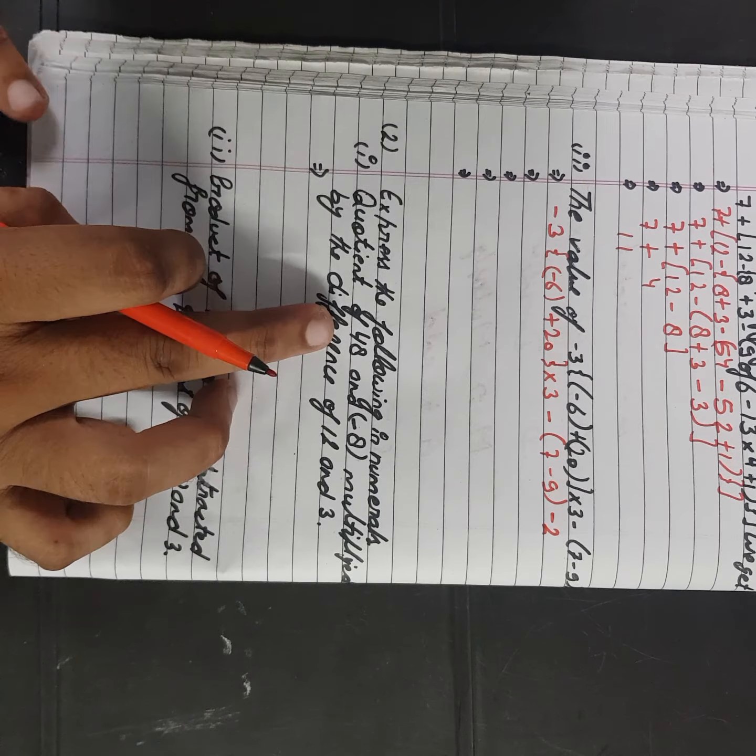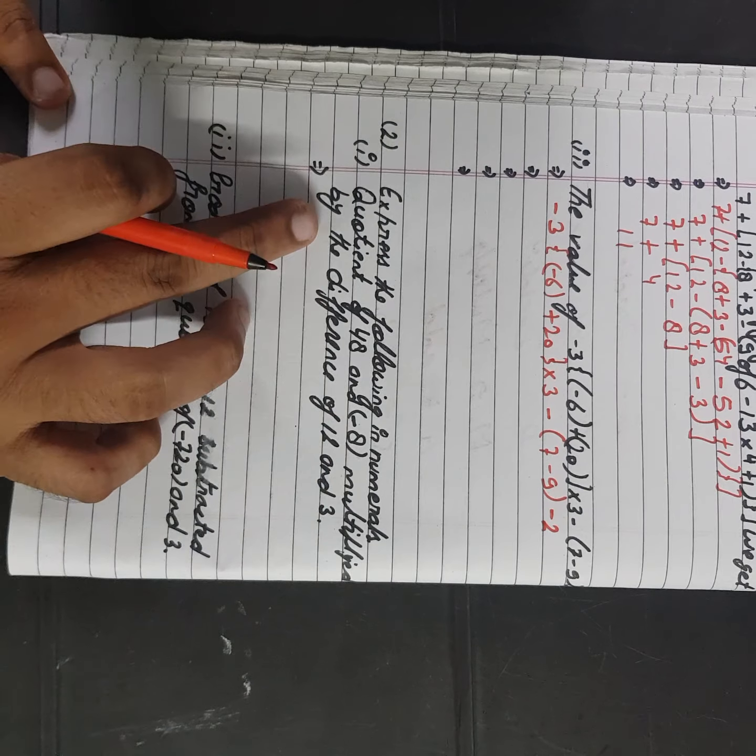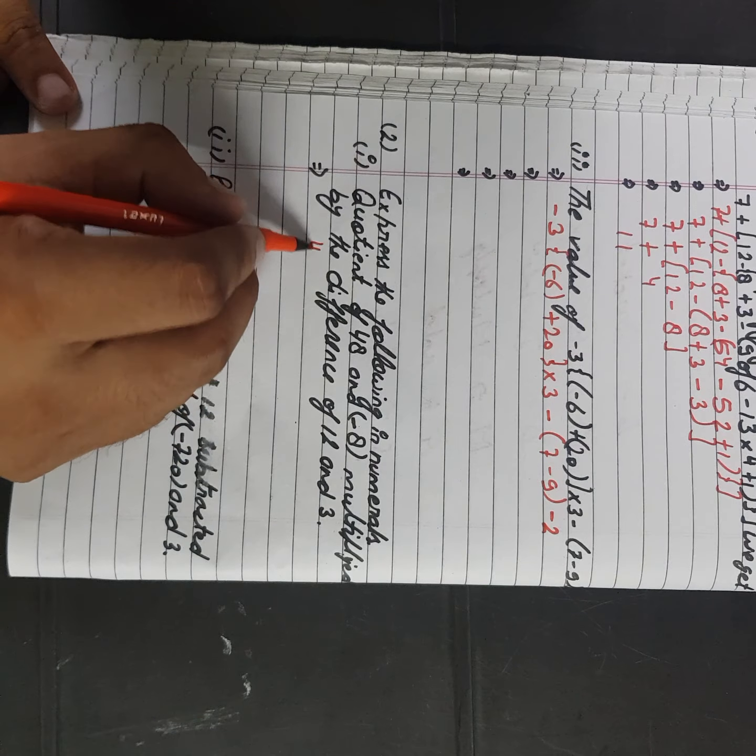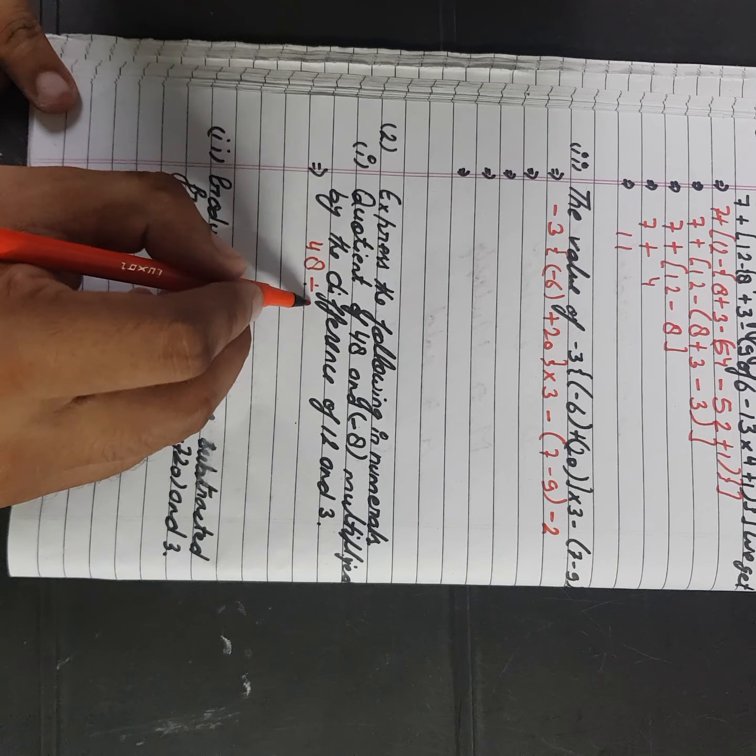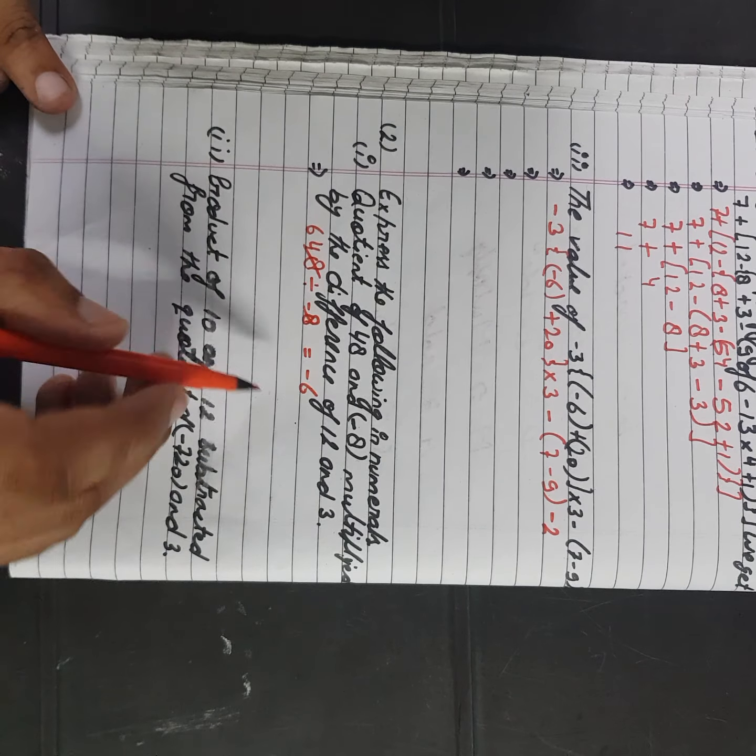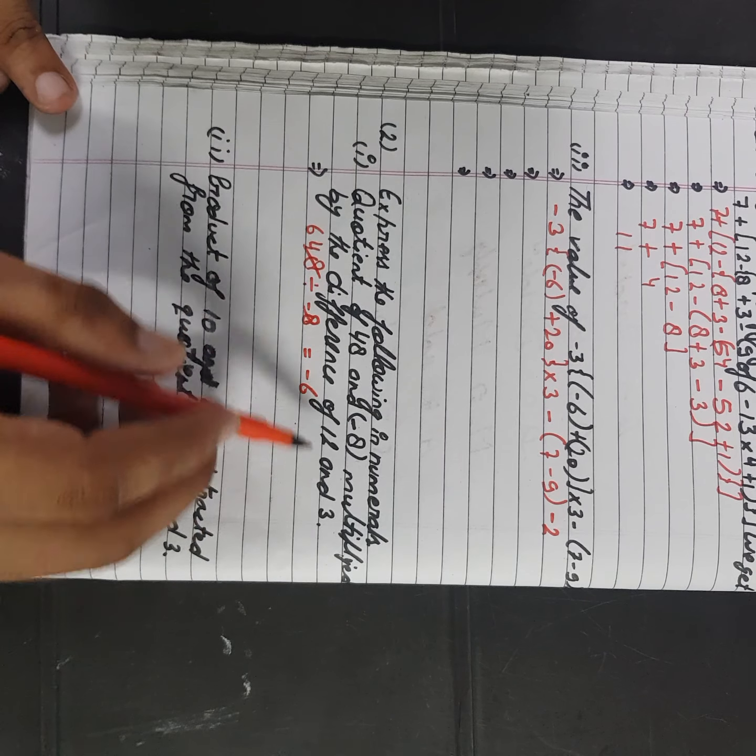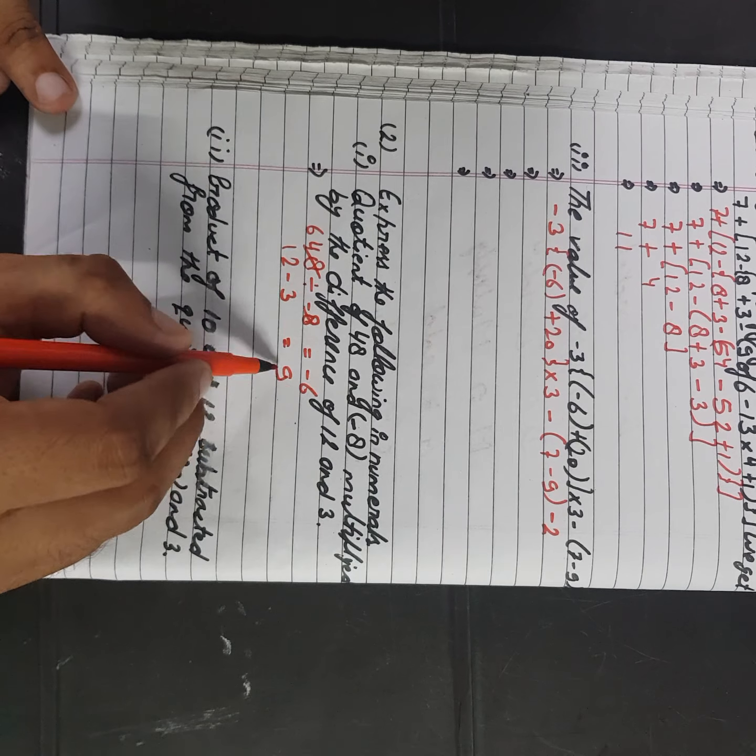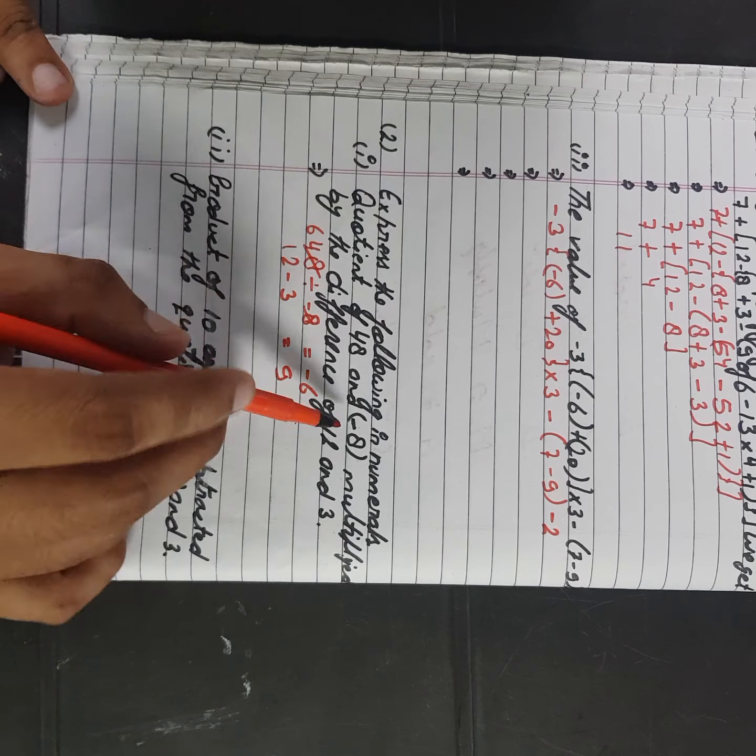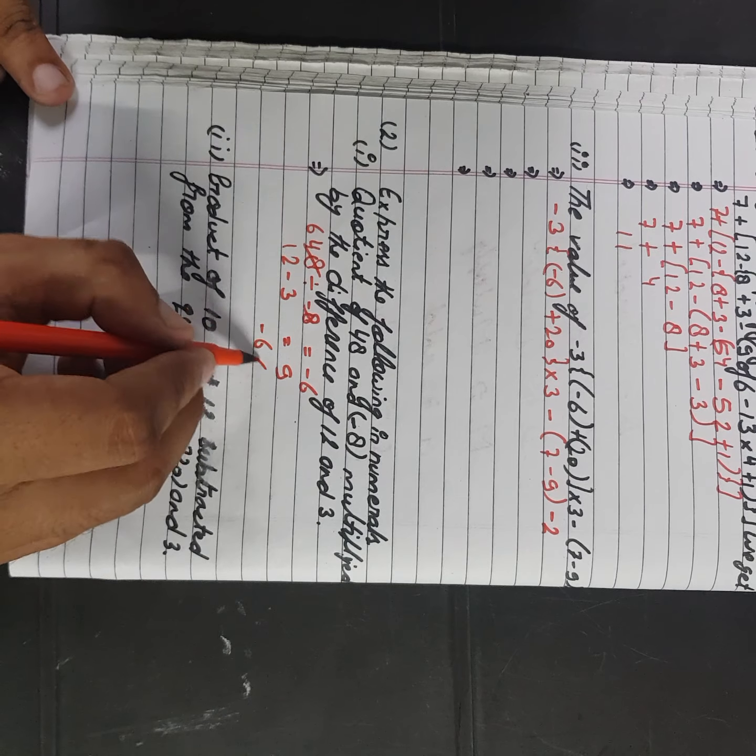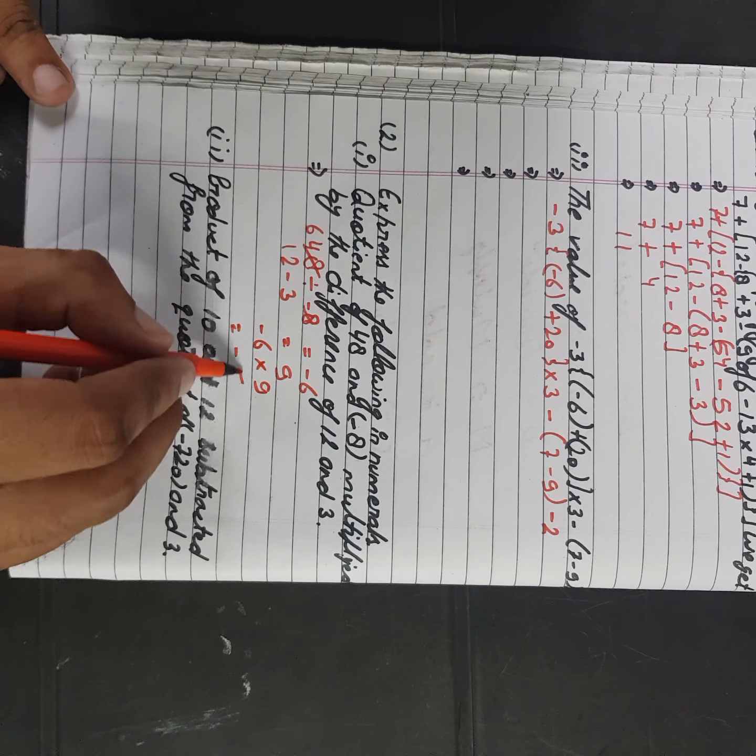So pehle kya karna hai, quotient nikali ge, quotient bata divide karege. 48 divided by minus 8 divide karege, 6 jayga minus ka minus 6, thik hai? By the difference of, in ka difference nikali ge. 12 minus 3 is equals to, bachega 9. Now kya karna hai, quotient of itna multiplied by the difference of itna. Now in doonho ki multiply ho jayga, minus 6 into 9. Answer is minus 54.